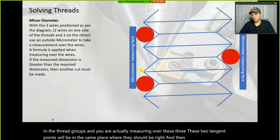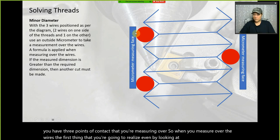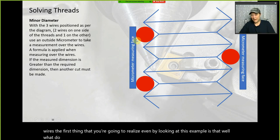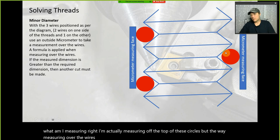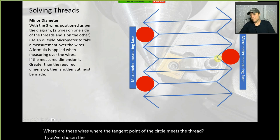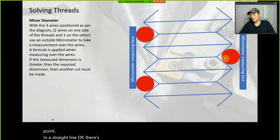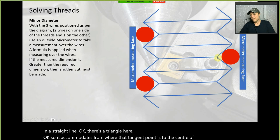When you measure over the wires, you realize you're actually measuring off the tops of the circles. But the measuring over wires method compensates for that — where the tangent point of the wire circle meets the thread, if you've chosen the best wire size, it accommodates the distance from that tangent point to the center of the wire and the depth below.